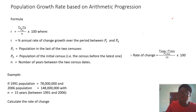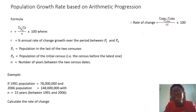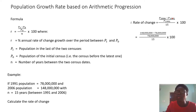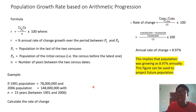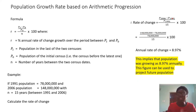We substitute into this formula. By substitution: Pt is the 2006 value, minus P0 which is 1991, over 15 — the difference between 2006 and 1991 — times 100. Substituting the figures gives us an annual rate of change equal to 8.97%. This implies that population was growing at 8.97% annually. This figure can now be used to project further population.